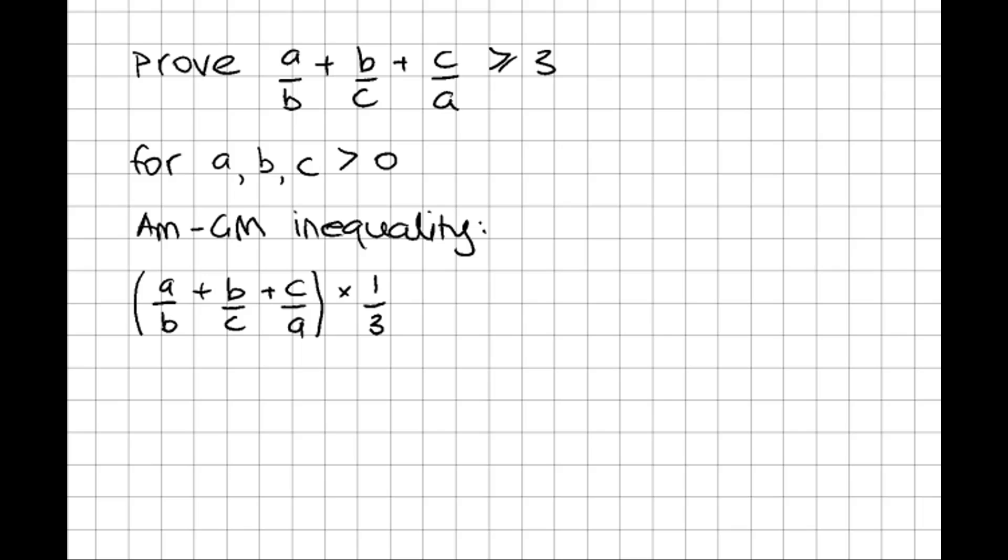Now the AM-GM inequality says that that arithmetic mean will be greater than or equal to the geometric mean. So here instead of adding up the three terms we multiply them together and then instead of dividing by 3 we take the third root. So if we think about what that would be, it would be (a/b × b/c × c/a) to the power of 1/3.